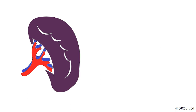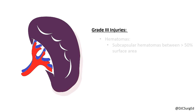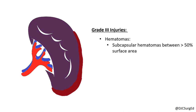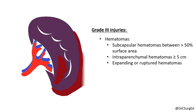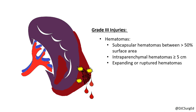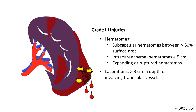Grade 3 injuries include subcapsular hematomas greater than 50% of surface area, intraparenchymal hematomas greater than or equal to 5 cm, expanding or ruptured hematomas, or lacerations greater than 3 cm parenchymal depth or involving trabecular vessels.